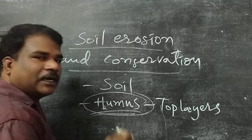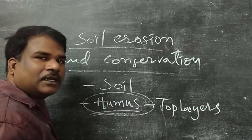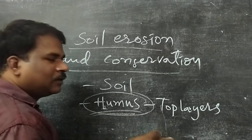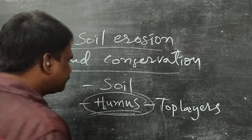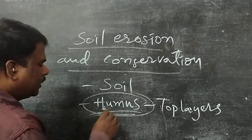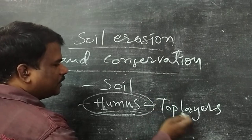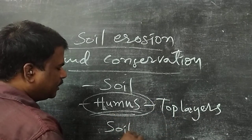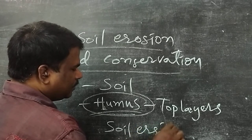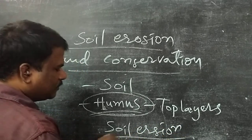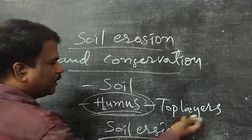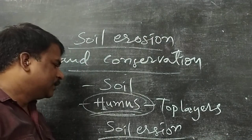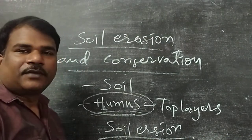Humus is also moving. Whenever humus is moving from one place to another place, plants cannot grow. The top layer of soil is called topsoil. Soil erosion means whatever top layers of soil are moving from one place to another place.